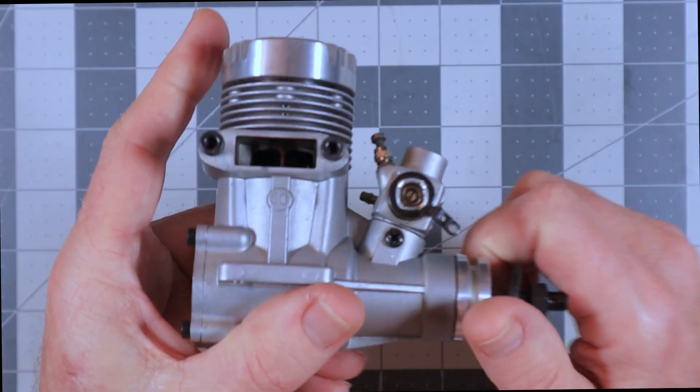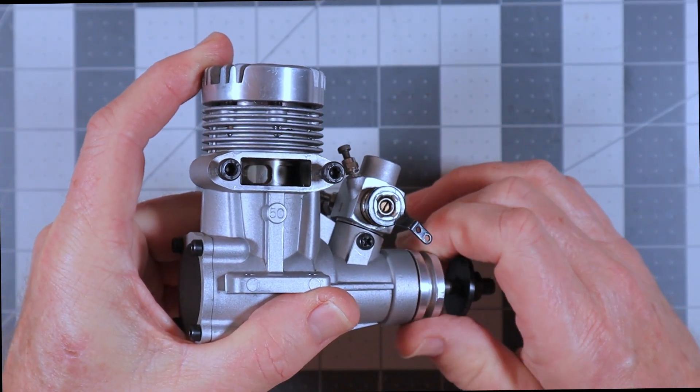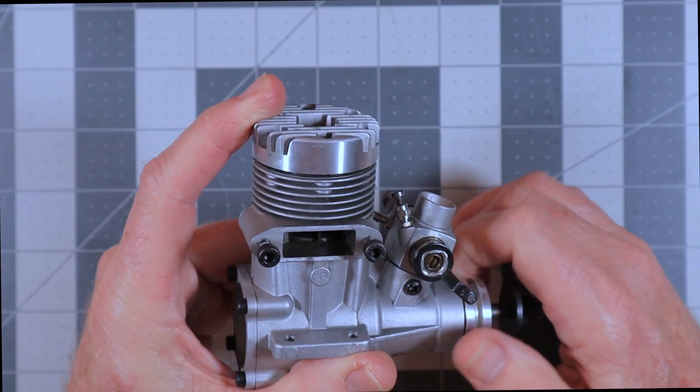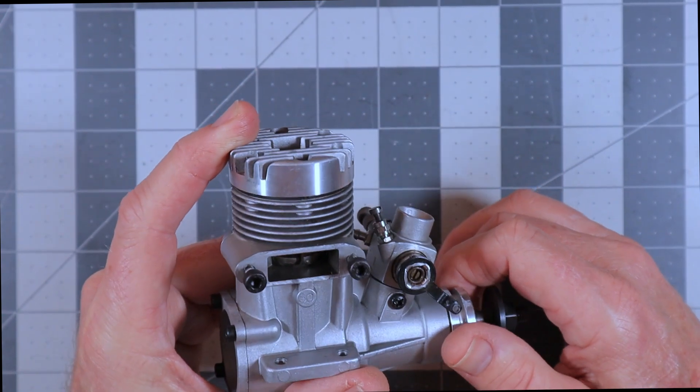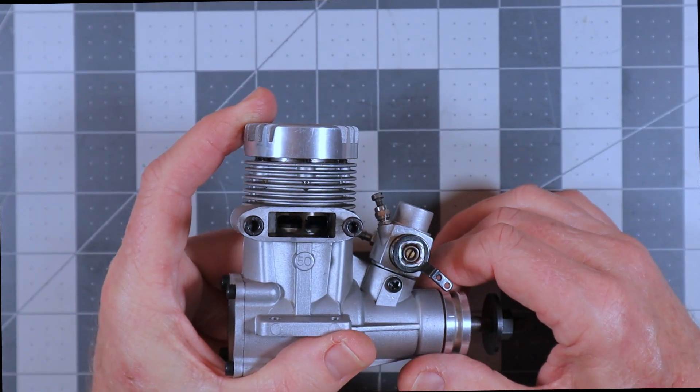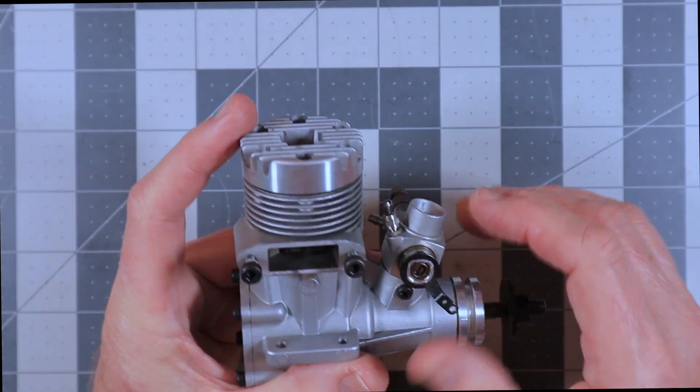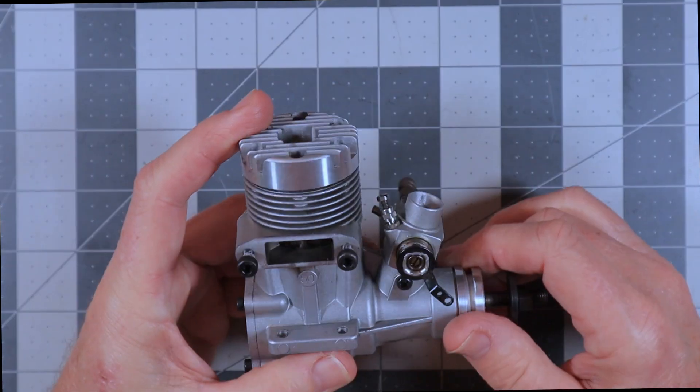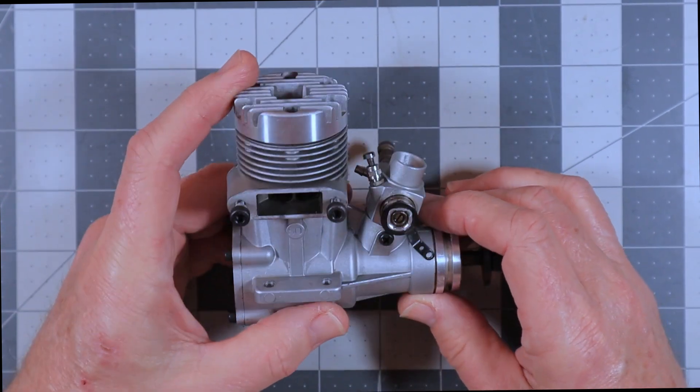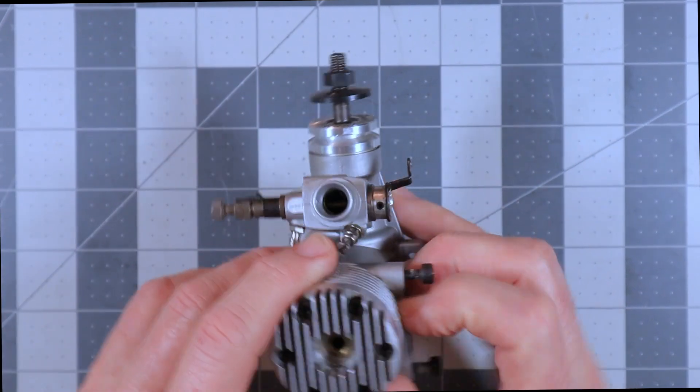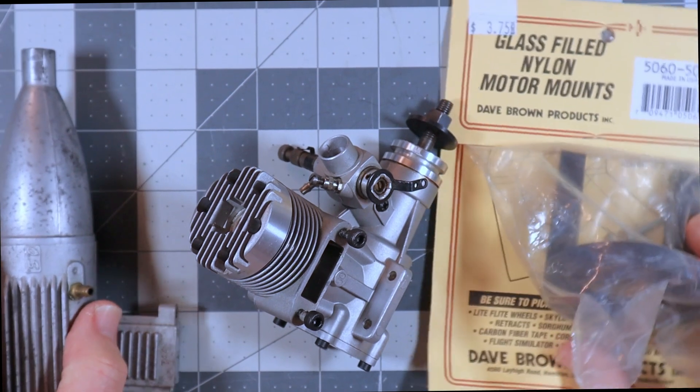But this engine looked like it was very low time. It is not an ABC engine. It is a ringed engine, a Dykes ringed engine. Now the one that Reese had given me, he had just replaced the ring in it and the bearings. So it was in different condition. This is a used engine. It doesn't smell. It smells like whoever had run it last had put some after run oil in it. But I can tell that it is a used engine.